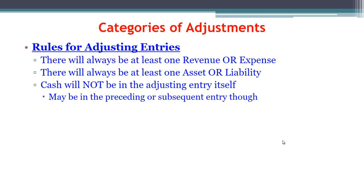These rules apply for all adjusting entries. There will always be at least one revenue or expense, and there has to be at least one asset or liability. You can have a mixture — sometimes a revenue and a liability, a revenue and an asset, an expense and an asset, or an expense and a liability — but there has to be one from each of those pairs. Also, for these core adjusting entries, you'll never see cash in the adjusting entry itself. If you see cash in one of those entries, that's either the initial entry or the subsequent entry, not the adjusting entry.